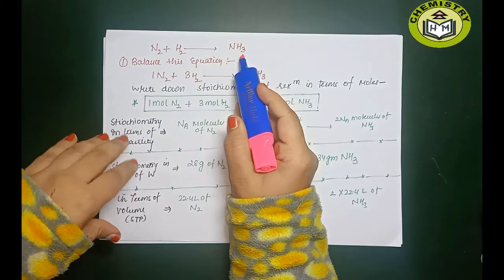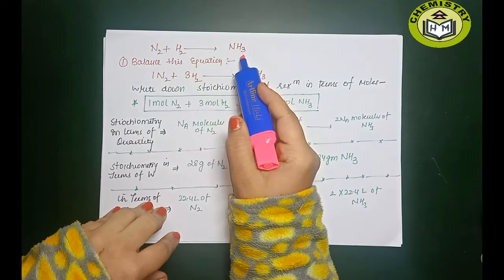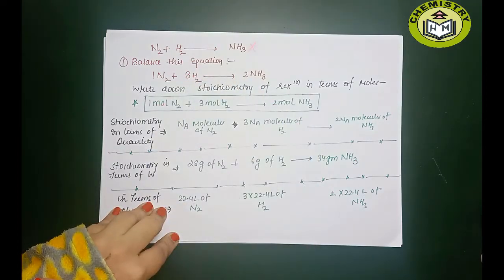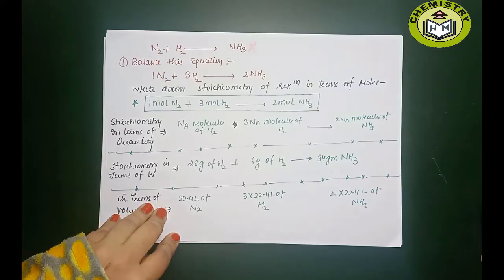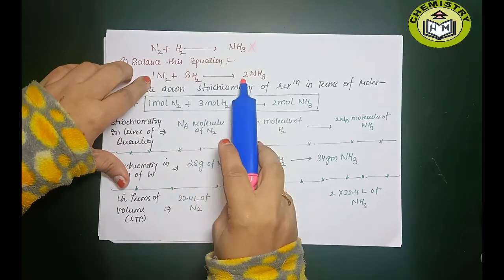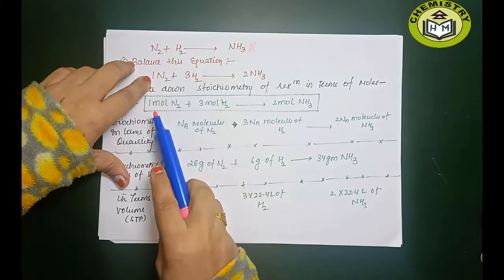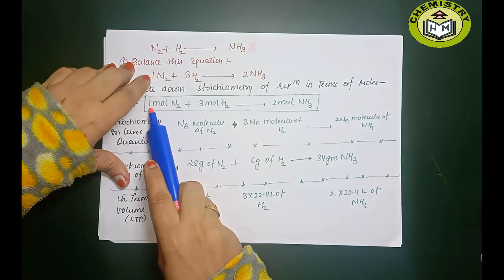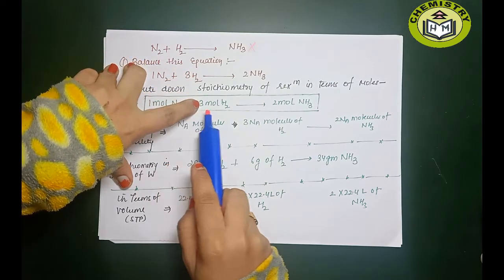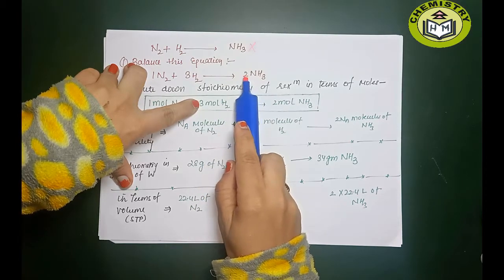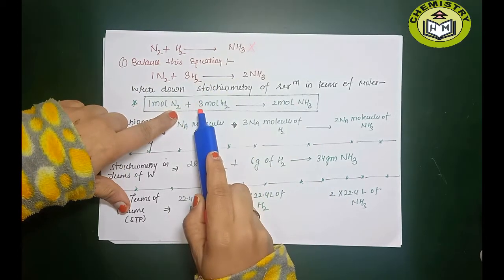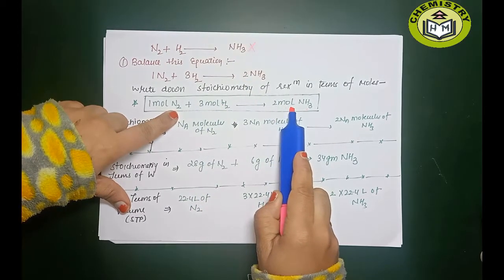Now: N₂ + H₂ → ammonia. This reaction is not balanced, so we write 3 before H₂ and 2 before NH₃ — now it is balanced. Notice: here 1 is written, here 3 is written, here 2 is written. Always remember — 1 means 1 mol of nitrogen reacts with 3 mols of hydrogen to give 2 mols of ammonia.